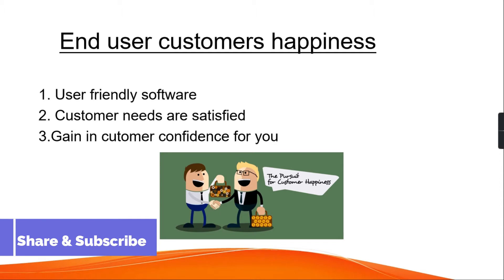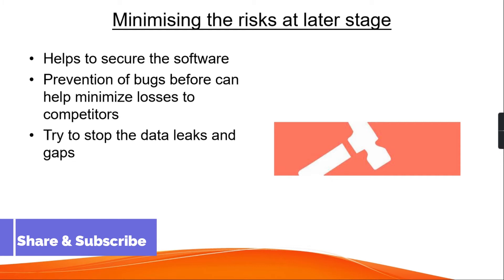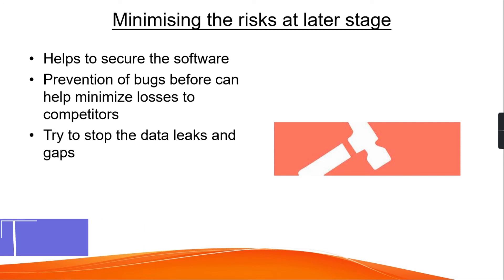The next point is minimizing the risks at a later stage. When you are testing a software and some bugs or errors are leaked, that may pose a risk to the customer and to the software. Minimizing risks at a later stage helps to secure the software, prevent bugs, minimize losses to competitors, and stop data leaks and gaps. If issues are identified beforehand, the software will be successful and the client will be happy.